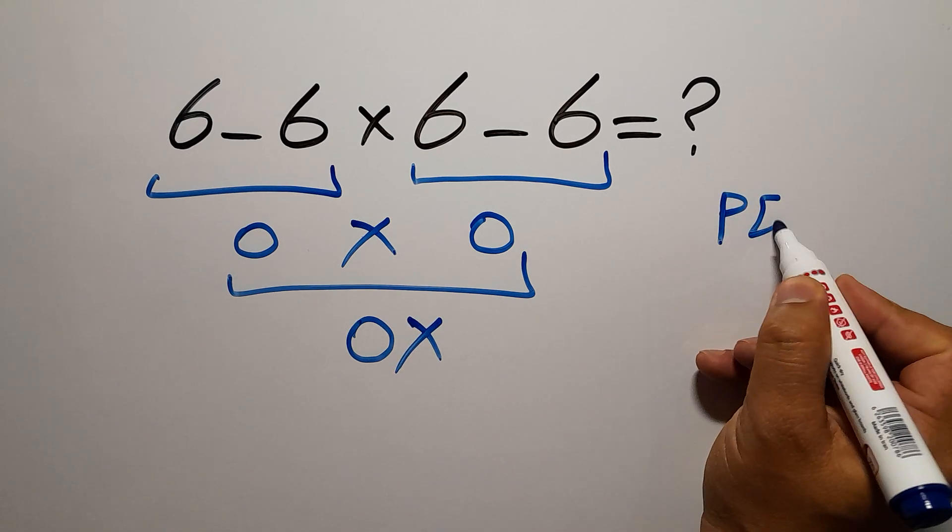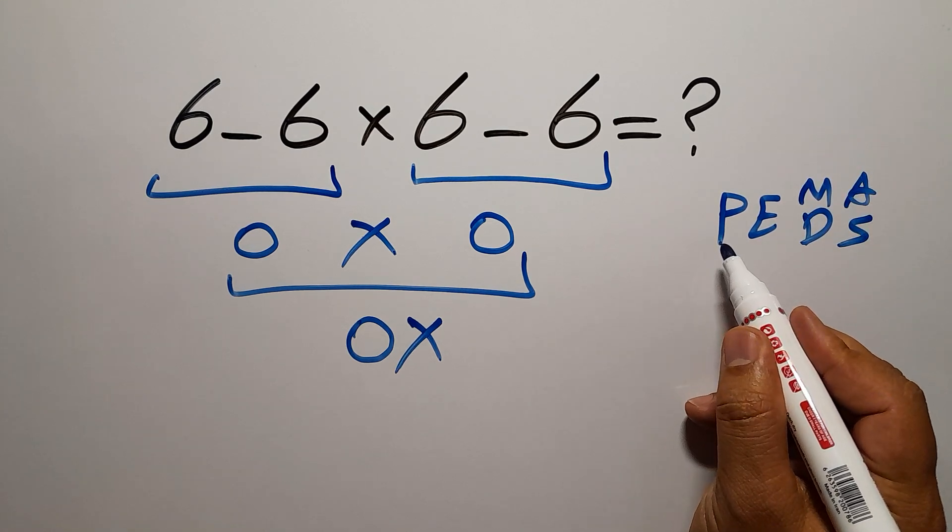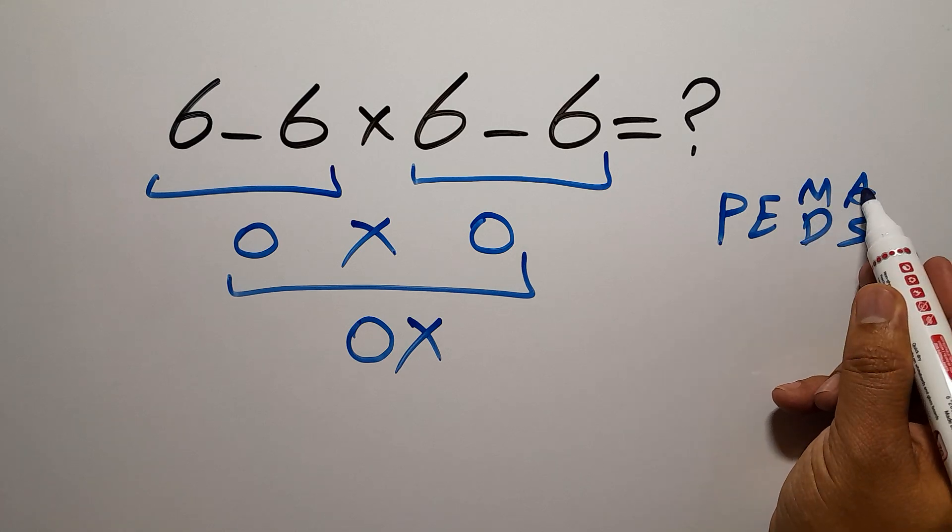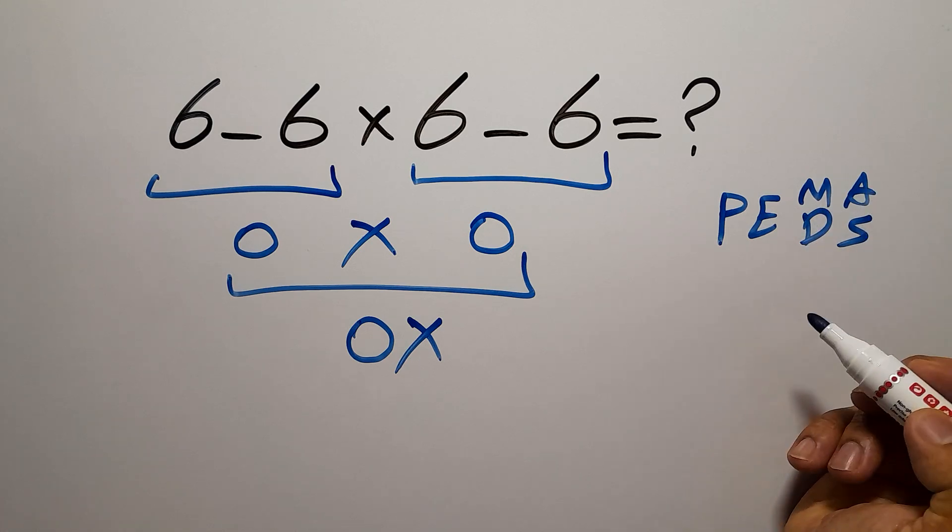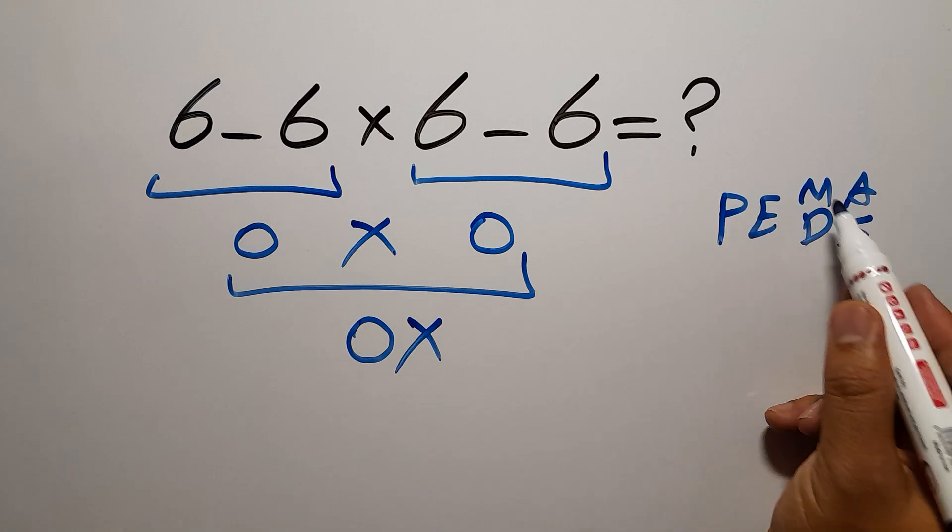PEMDAS: P stands for parentheses, E stands for exponents, M and D stands for multiplication and division, and A and S stands for addition and subtraction. First we have to do parentheses, then exponents, then multiplication or division, and finally addition or subtraction.